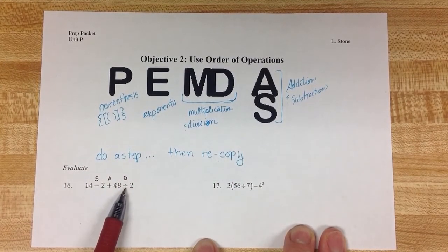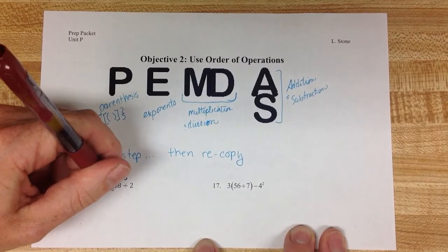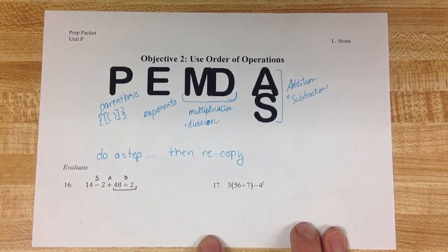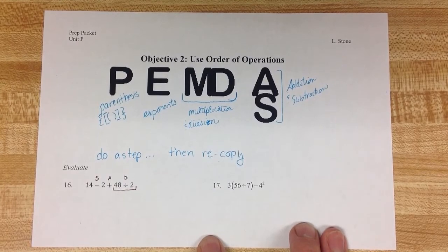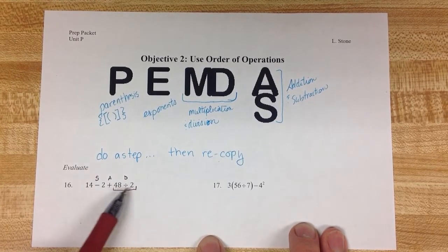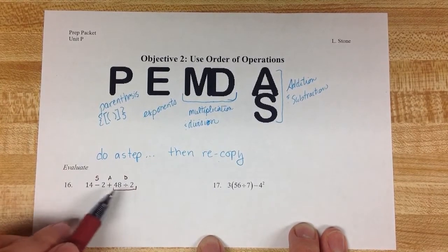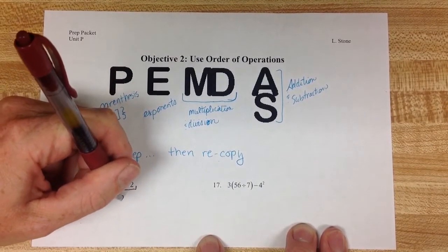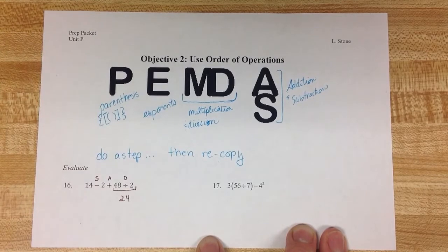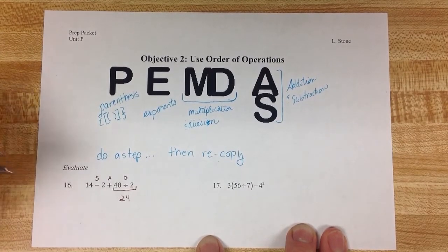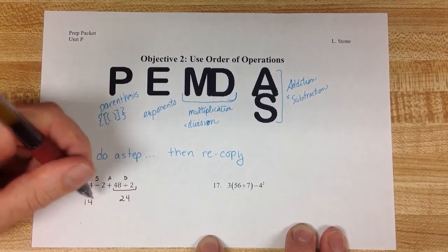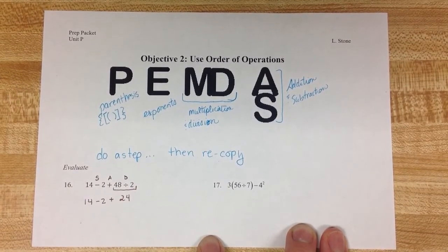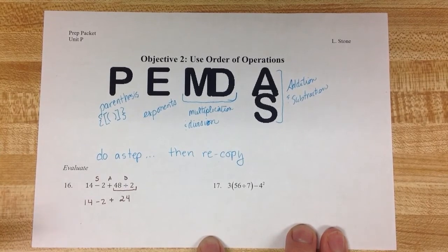We have to do them in the PEMDAS order. So this division problem right here, this taking 48 and dividing it by 2, is the first math that we're going to do. So 48 divided by 2 will give us 24. I've done a step, so now I'm going to recopy the rest of the problem. The 14 minus 2 plus 24 just gets copied down exactly as it was above.